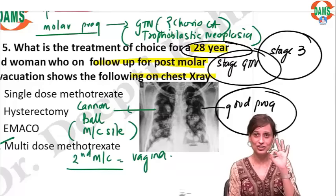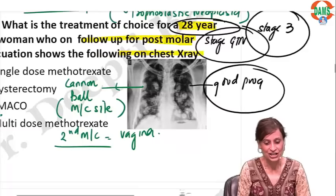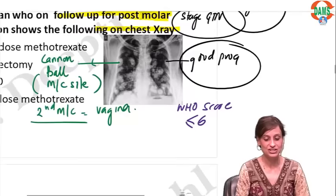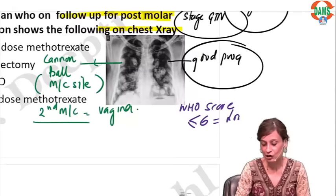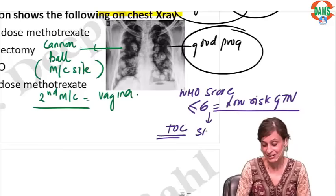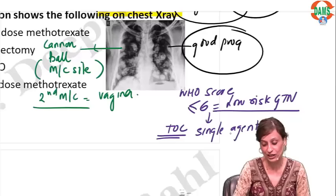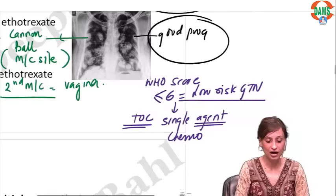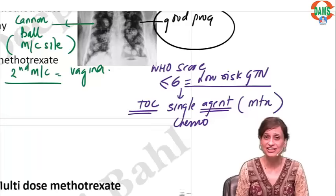Most likely her total WHO score is less than six. If the patient's WHO score is less than or equal to six, we call her low-risk GTN. For low-risk GTN the treatment of choice is single-agent chemo. The drug is methotrexate. Will she receive a single dose? No — when dealing with neoplasia you cannot give only one dose.